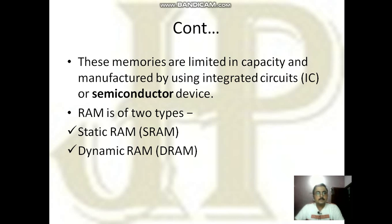These memories are limited in capacity. Whenever you compare with secondary devices like hard disk, you will see that the capacity of RAM is much lesser. RAM is manufactured using integrated circuits or semiconductor devices. Based on the semiconductor device, RAM is of two types: static RAM and dynamic RAM.